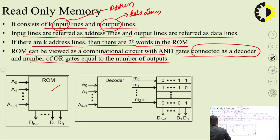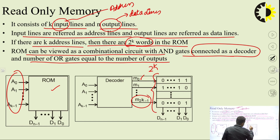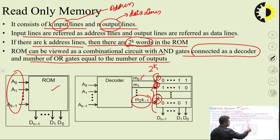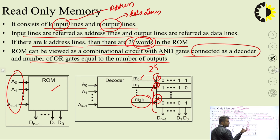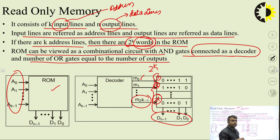The general ROM structure has k address lines from 0 to k-1, giving 2^k words inside — from address 0 to 2^k minus 1. These 2^k locations each hold some data, referred to as words. All locations have the same number of bits, though the actual bit values differ. For example, each location may hold 8 bits, and depending on the requirement, some bits will be 1 and some will be 0.